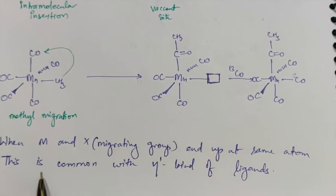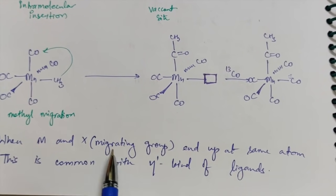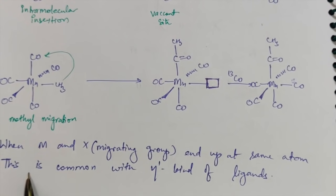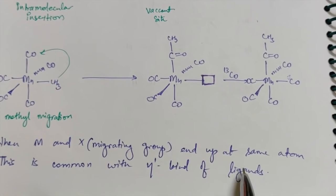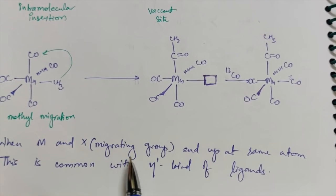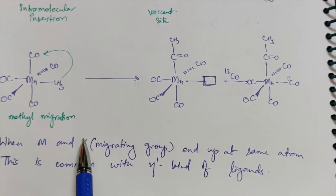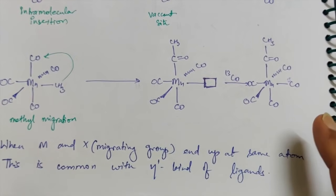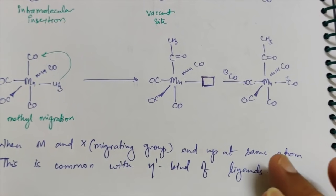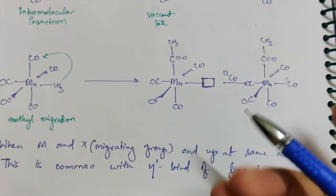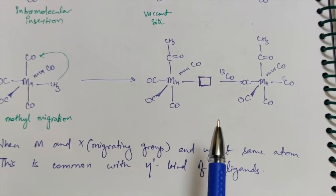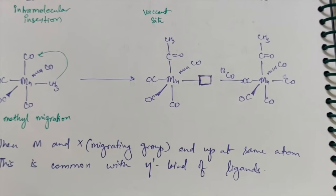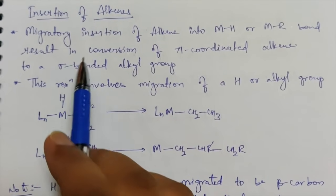Some key points: when metal and the migratory group end up at the same atom, this is common with eta-1 kind of ligands — both the metal and the migratory group go to the same position. There are actually two types of migratory insertion: 1,1 migratory insertion and 1,2 migratory insertion. We'll try to understand them in detail.